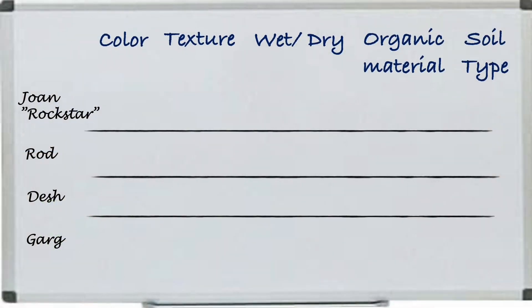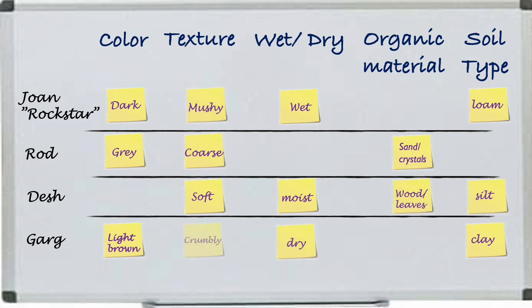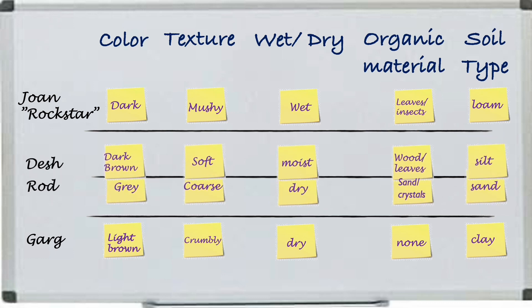Have each student find one person in the class that has a soil similar to their own, and record how they determined that the soils were different. As a class, brainstorm and list on the board the different characteristics students used to describe their samples, then group or classify samples accordingly.